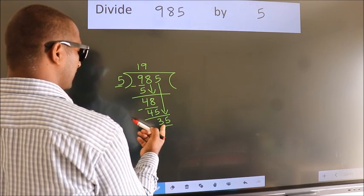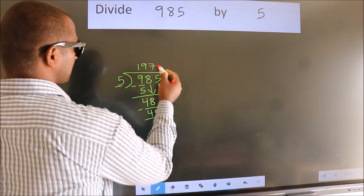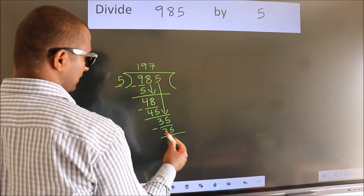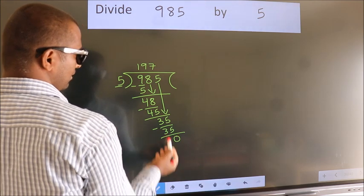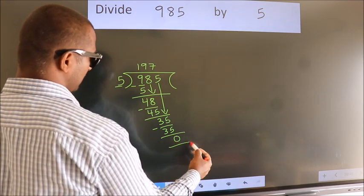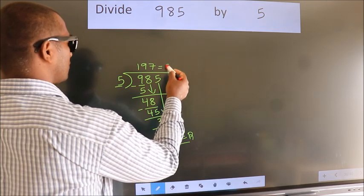When do we get 35? In 5 table, 5 sevens 35. Now, we subtract. We get 0. No more numbers to bring it down. So, we stop here. This is our remainder. This is our quotient.